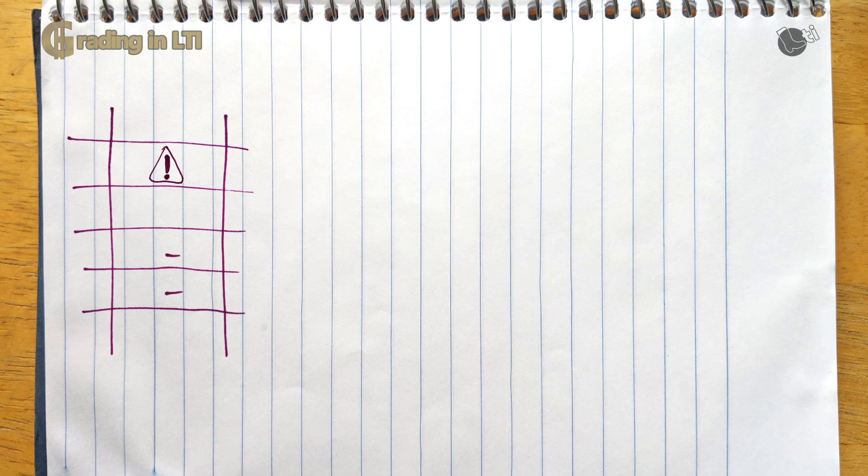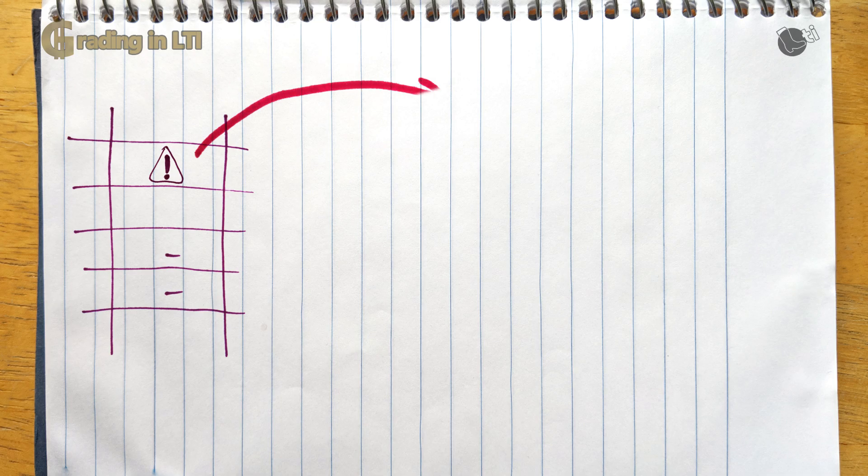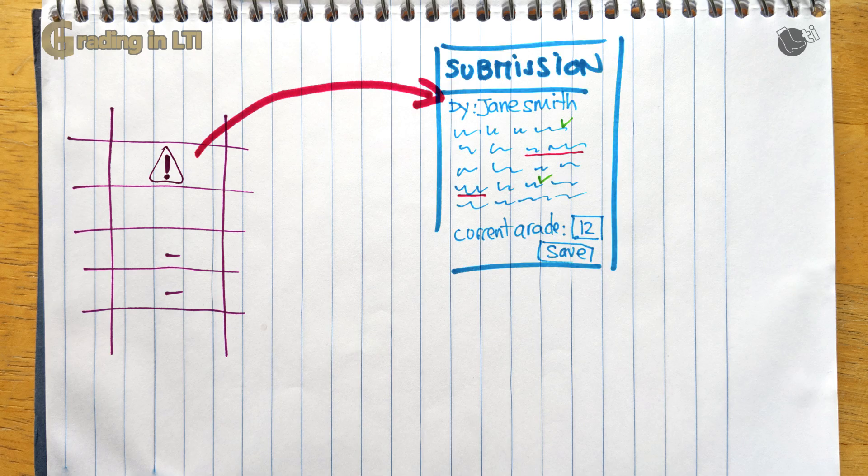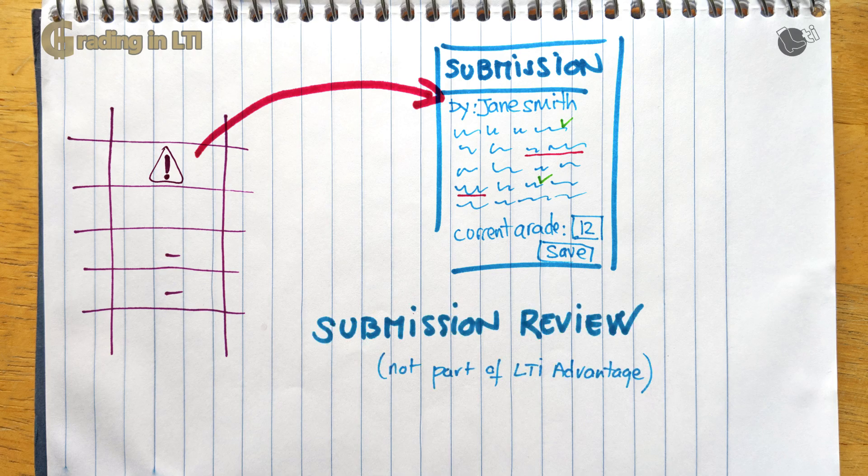Well, at this stage, the instructor will probably have to find a way to navigate to the tool to locate that submission and do the grading. Wouldn't it be nice instead that you could just click directly on that flag on that indicator and the tool would open right away in the submission so you could review the student's work or review and carry on with the grading as an instructor? Well, that is the exact purpose of a companion specification to the assignment and grade services called submission review message.